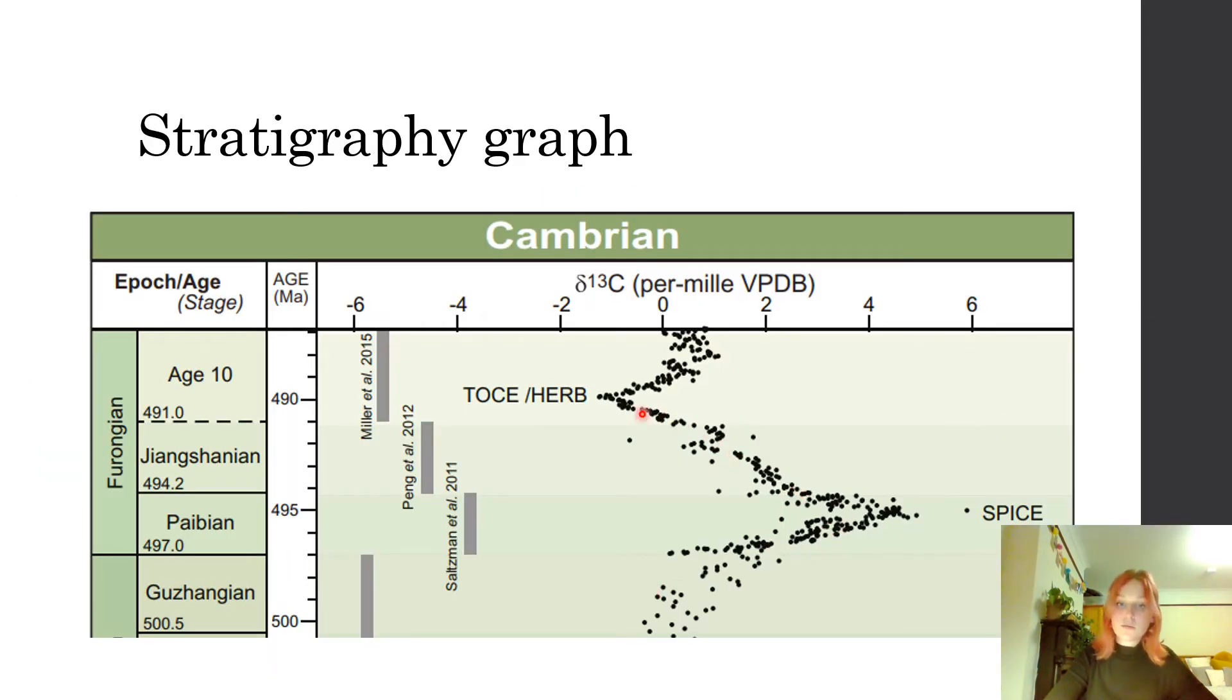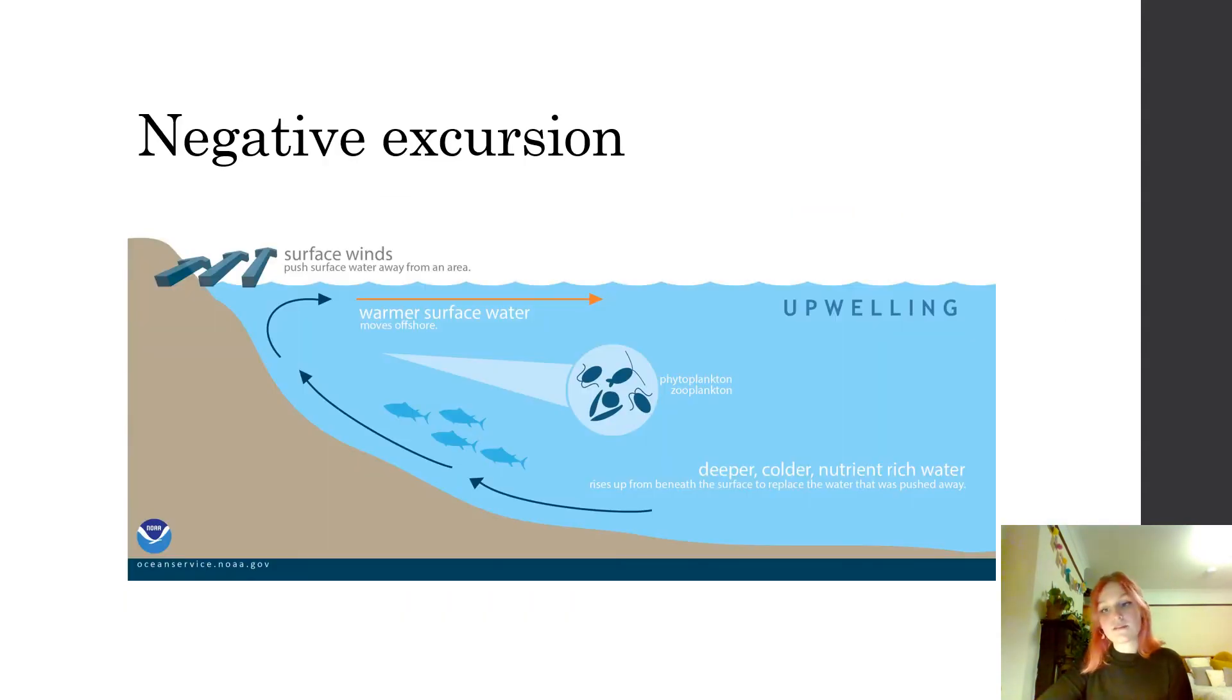The record then becomes a lot more negative. This is due to upwelling or increased weathering of organic matter, also caused by the fact that photosynthesis prefers the lighter carbon 12 to carbon 13.